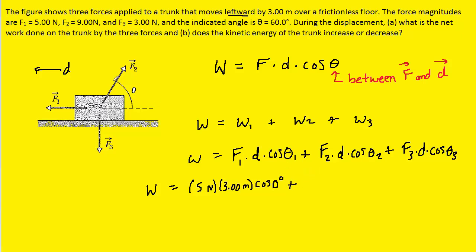We can next move on to F2, which is given to us as nine Newtons. Once again, the distance is three meters. And then for theta two, we want to figure out what the angle between F2 and the displacement is.